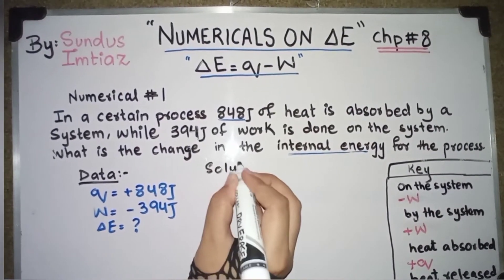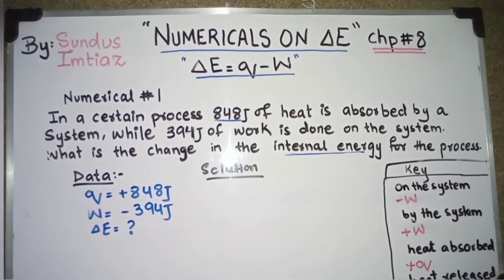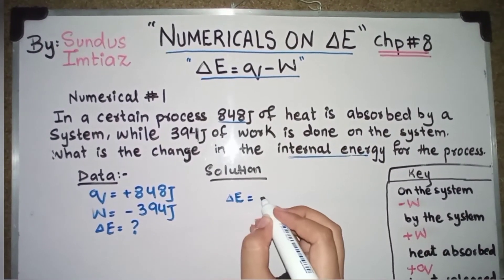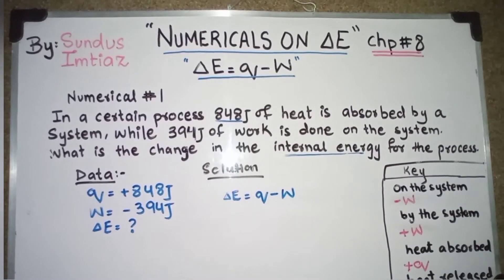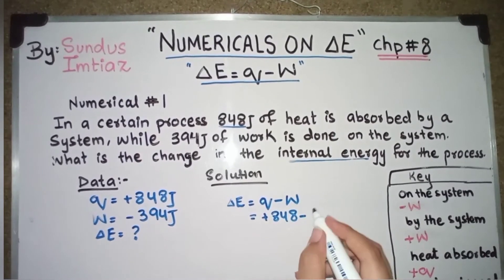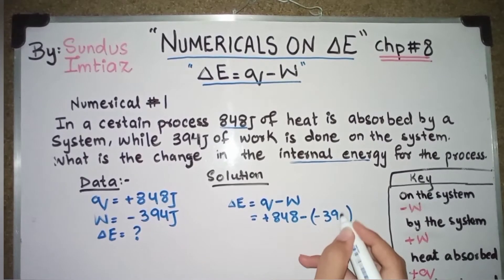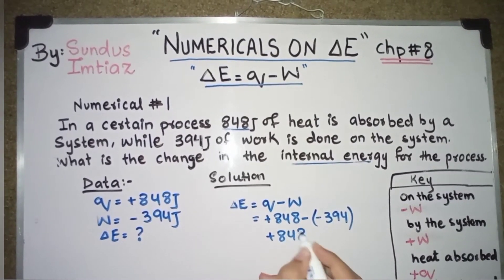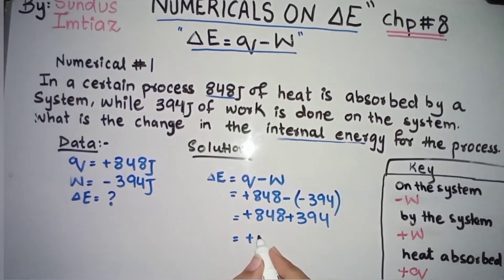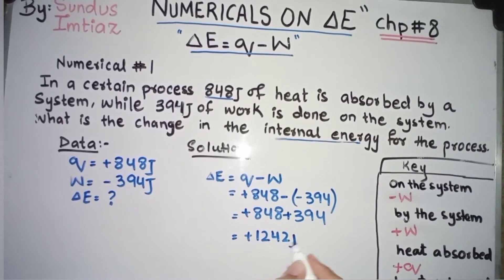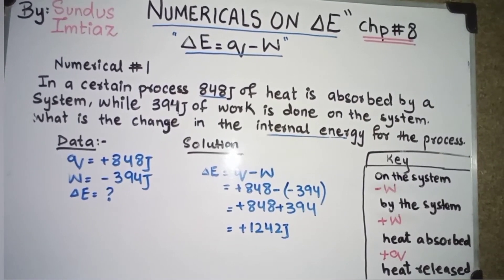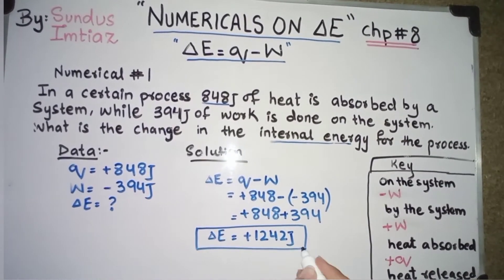So let's write internal energy is equal to question mark. Now its solution. The formula would be same that I have written above here. Change in energy is equal to Q minus W. Q is heat, W is work. So Q here is 848 minus work here is minus 394 Joules. So 848 minus minus is plus 394, equals 1242 Joules. Energy's unit is Joules. So that's why I have written here Joules.